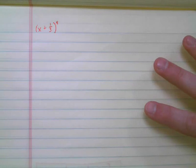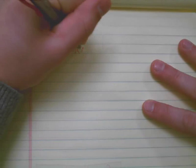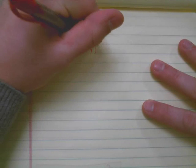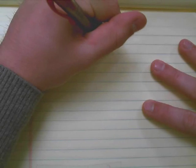The first thing you need to remember is that x plus one-third to the fourth power is a shorthand way of saying x plus one-third times itself four times. So really what we're doing is this problem.